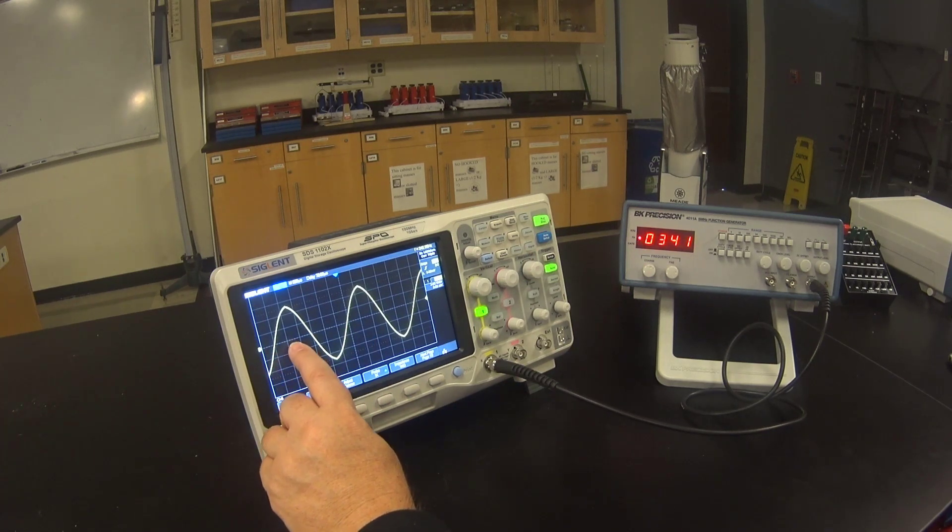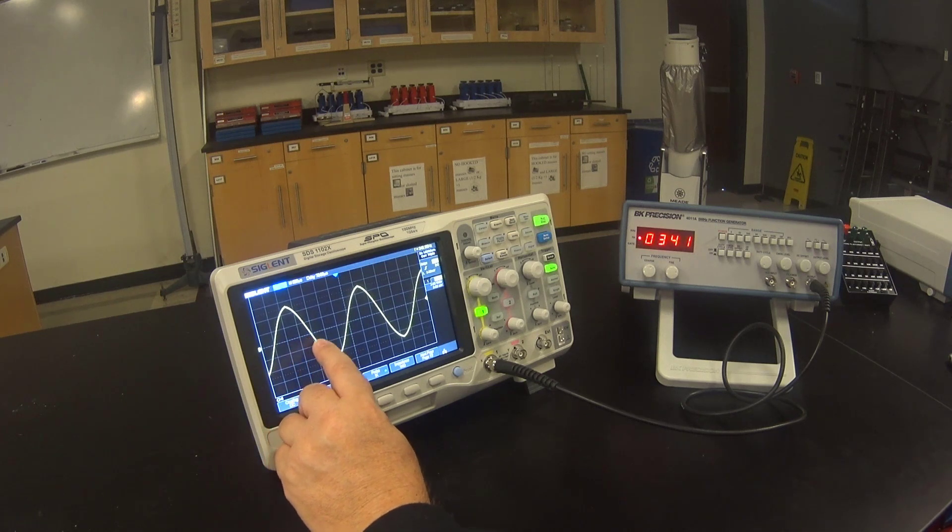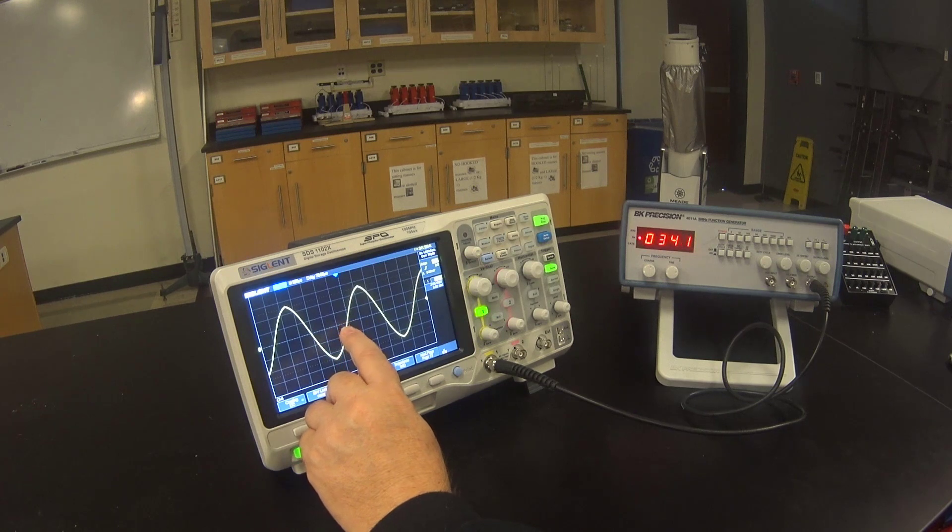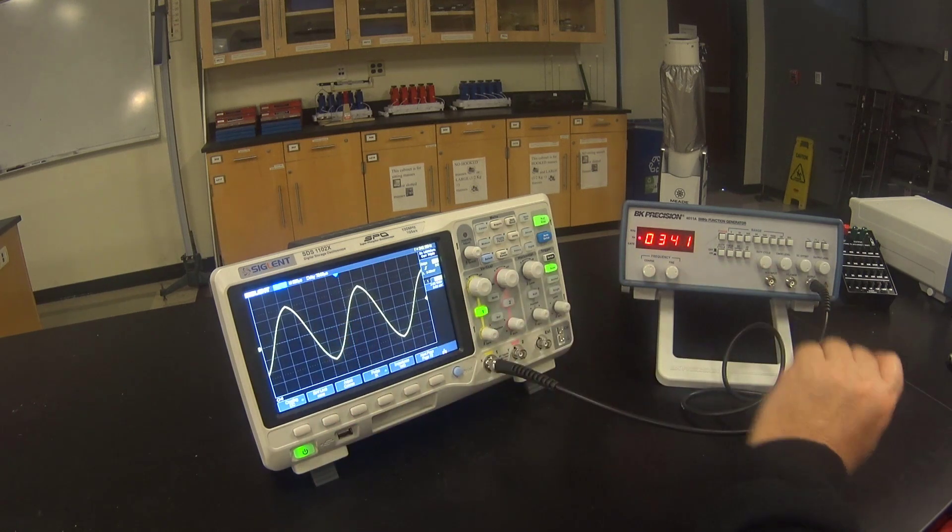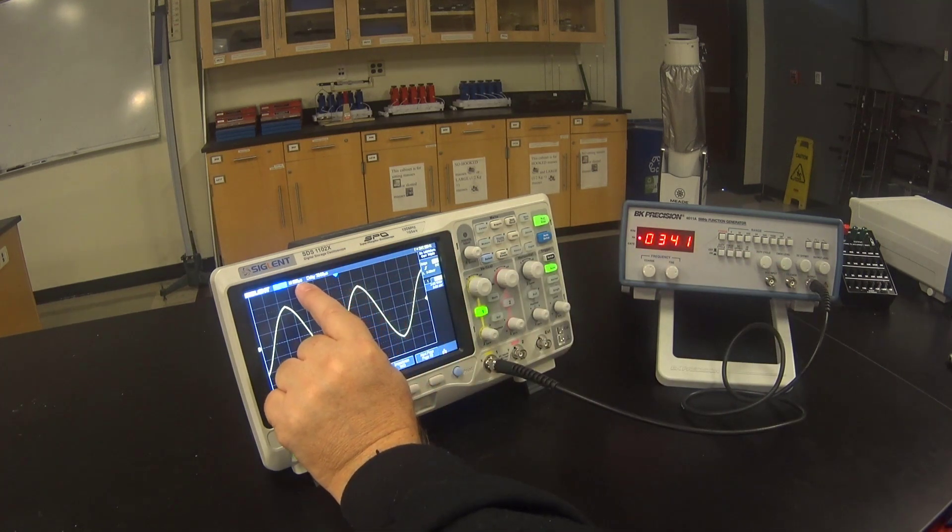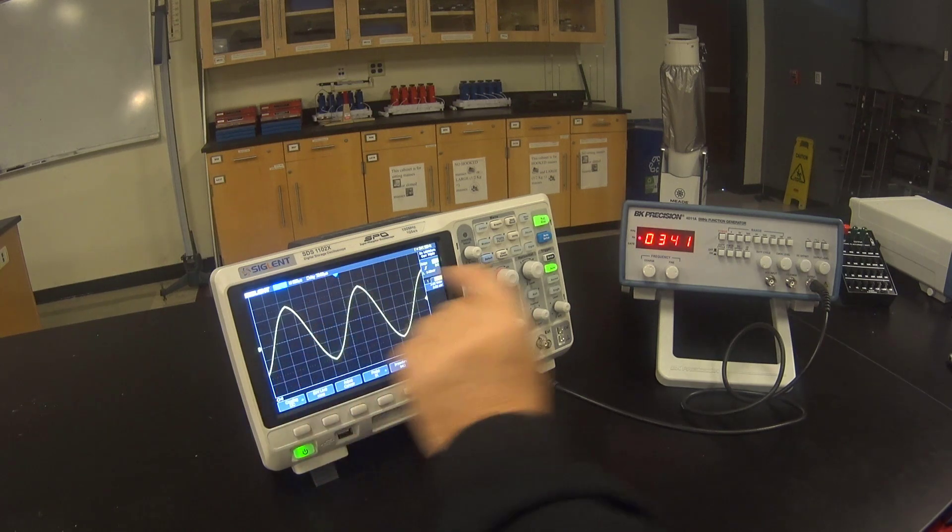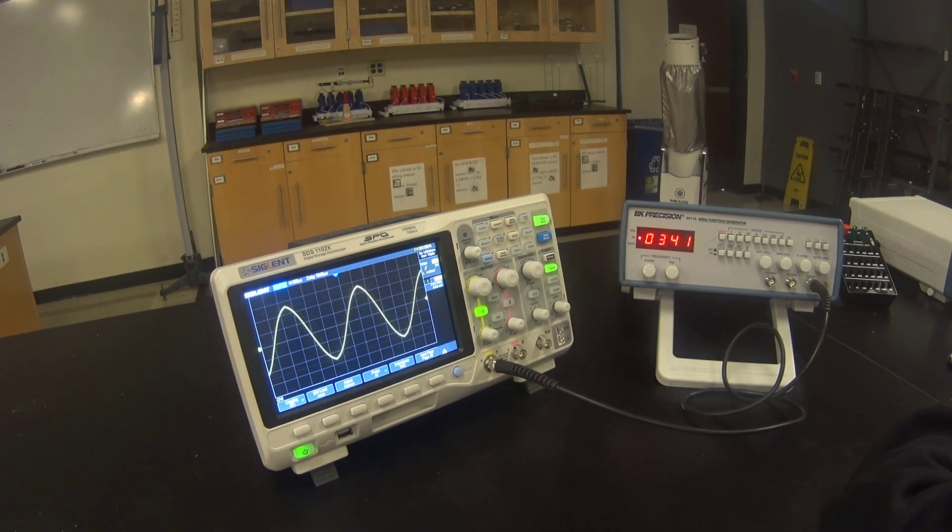Each box is a division. I'll count the number of divisions between the beginning and the end of the wave that I'm measuring. Multiply the number of divisions times the time per division listed right here. And that will give you the period. And then one over the period is the frequency.